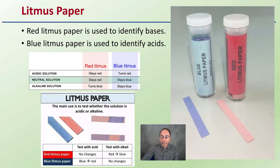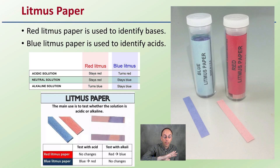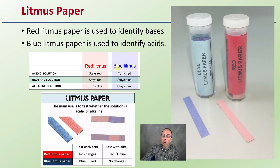Litmus paper is basically a way to test for an acid or a base. Looking at blue litmus paper and red litmus paper — depending on what color it turns, it gives you an indication of whether you're in an acidic or basic solution. In an acidic solution, the blue litmus paper will turn red. In an alkaline solution, the red litmus paper will turn blue. If you dip both and blue stays blue and red stays red, you're dealing with a neutral substance.